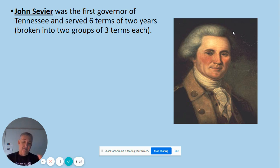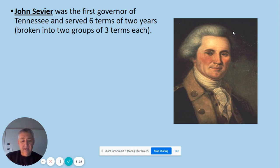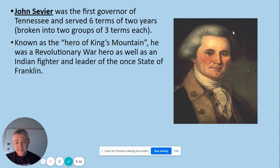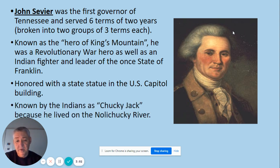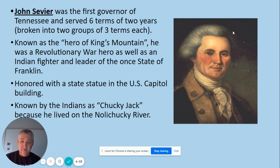After Tennessee became a state, John Sevier became our first ever elected governor. He served a total of six terms — at that time, terms were two years, not four. The Constitution had a rule limiting him to three consecutive terms, so he served three, took one off, then came back for three more. He was immensely popular because of his fighting during the Revolutionary War and as an Indian fighter. He is honored in the U.S. Capitol with a statue — one of two Tennesseans, along with Andrew Jackson. Sevier County, Sevierville, and Pigeon Forge are all named for him.